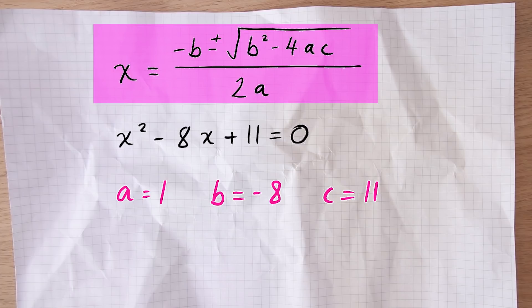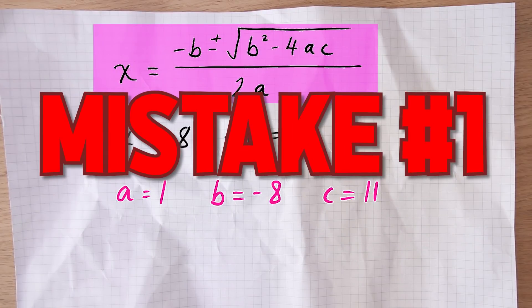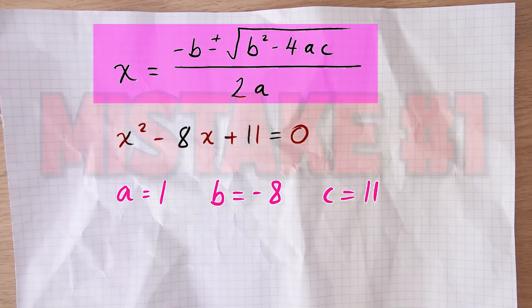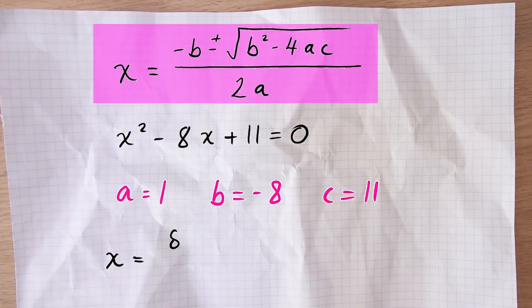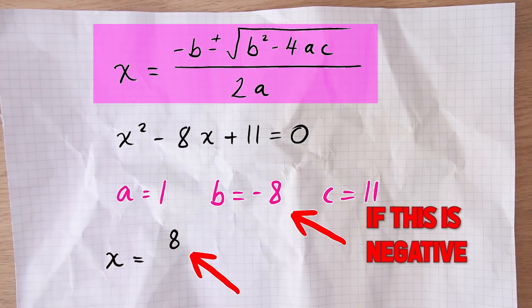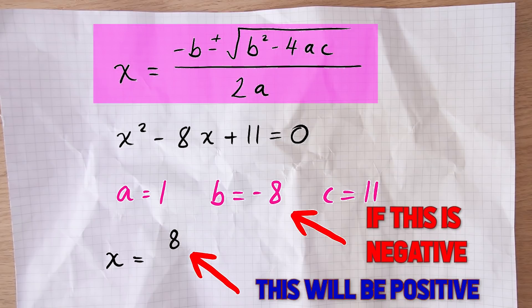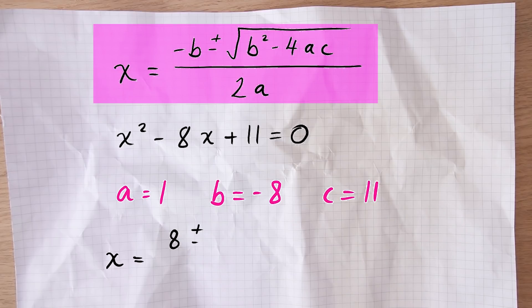So let's now put those numbers into our formula. x equals negative b — and this is mistake number one that people sometimes make: they don't realize that the negative of a negative is a positive. In our case b is negative 8, so we want negative negative 8, which is positive 8. So if your b is negative, then negative b is positive. You'll end up with a positive number in the first part of your formula.